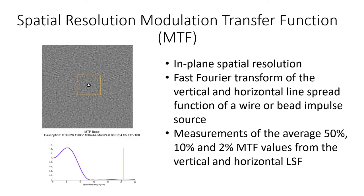Spatial resolution modulation transfer function: the spatial resolution is measured from the point spread function of the bead and wire in the CTP 591 and CTP 528 modules. Point spread function baseline correction uses the average of pixels at a 5 mm perimeter and 8 mm for a large field of view dataset. Line spread functions are generated by integrating the point spread function along both the vertical and horizontal directions. The reported MTF results are the average discrete Fourier transform of both line spread functions.